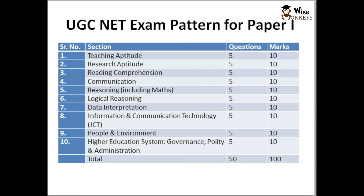Section 1 is Teaching Aptitude, where they check your teaching skills. Section 2 is Research Aptitude, where they check your research aptitude and how inclined you are to do research. Section 3 is Reading Comprehension, where your English comprehension is checked. Section 4 is Communication, where communication skills are checked. Section 5 is Reasoning, which is based on two parts: mathematical reasoning and logical reasoning. In logical reasoning, there might be a few assertion-based questions as well.